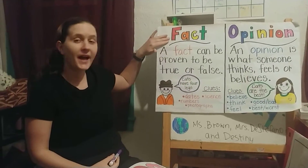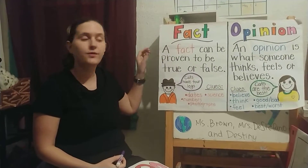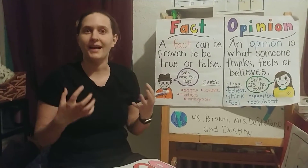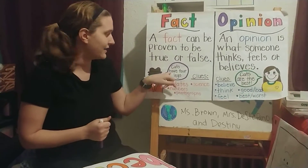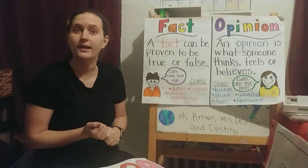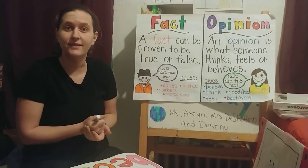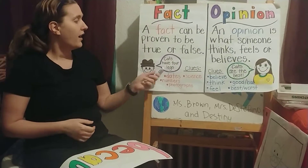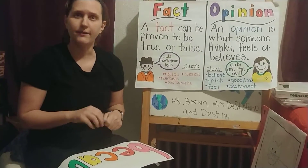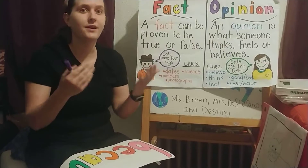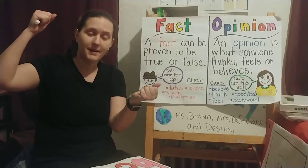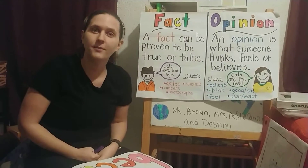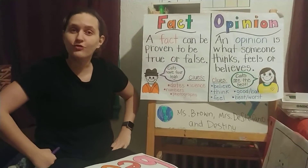I want to review. A fact is something that can be proved true or false — it's something that you could go out and actually count. When I say a cat has four legs, I could go count and see that a cat really does have four legs. Another fact would be that sharks have sharp teeth. I could go out and see a shark open its mouth — don't do this for real — feel its teeth and see that they are sharp. Those are facts, things that are true.